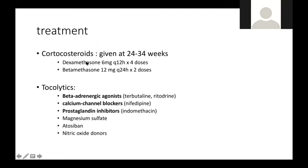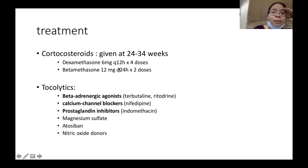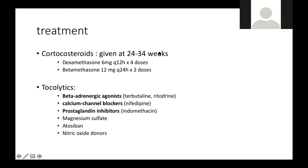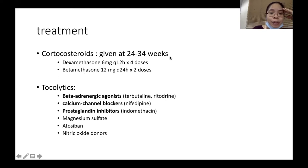The two corticosteroids you can give are dexamethasone or betamethasone. Corticosteroids are given not as a tocolytic, but for lung maturation — especially if you expect that the baby will deliver early.